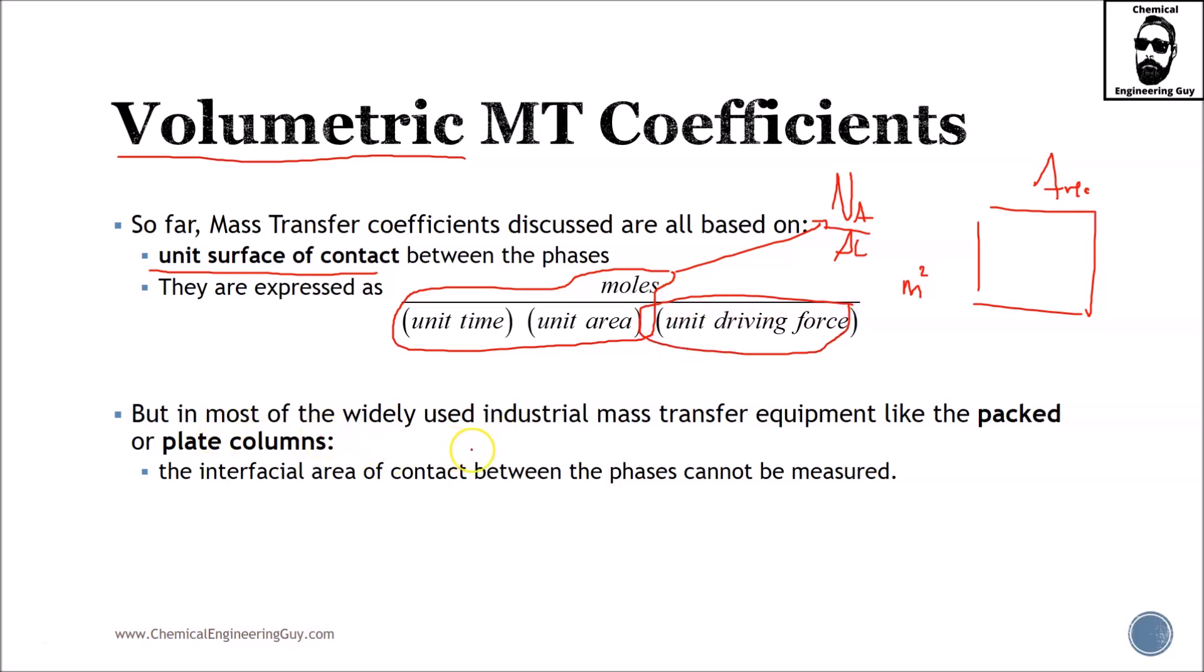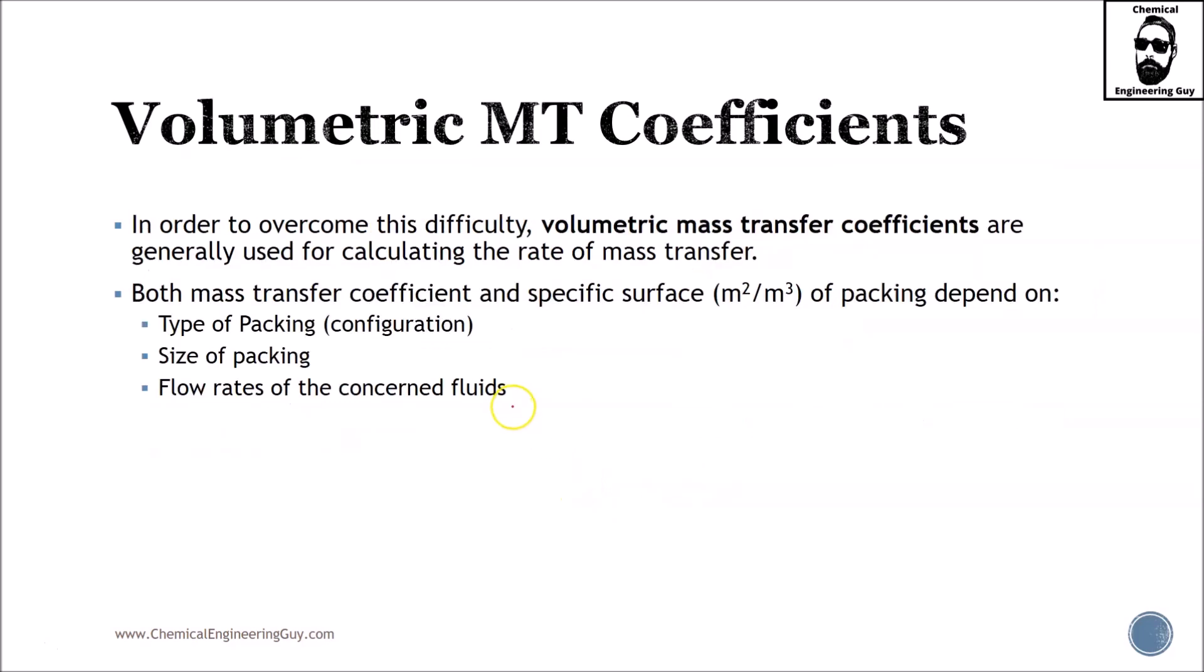But in most of the widely used industrial cases, we use a lot of packings or plate columns. And the interfacial area is not only hard to calculate, but also not convenient at all. In order to overcome this difficulty, we typically use volumetric mass transfer coefficient, which is great because we just need now to calculate or get the total volume they occupy.